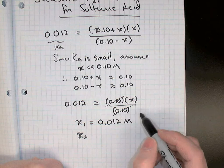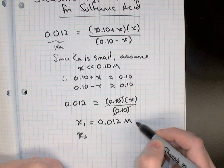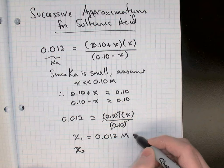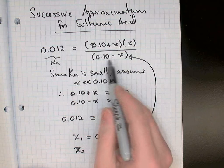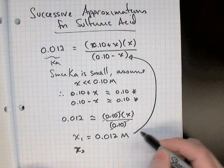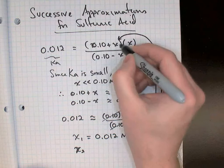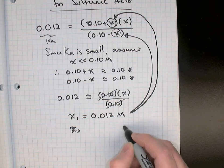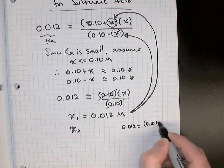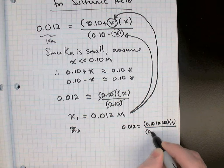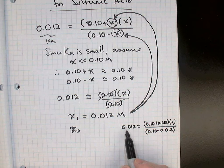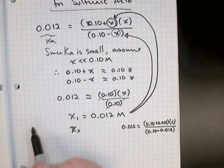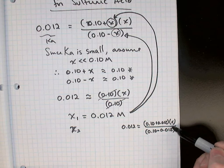Now how do you get the second approximation X₂? The technique that we learned when using this method is to take the first answer we get and go back into our original equation and place it wherever we ignored the X. When we did this before, that meant putting it only in the denominator because there we have this 0.1 minus X, but here notice we ignored X twice, so we have to go back and put it both in the denominator and in the numerator. In this spot in the numerator and in this spot in the denominator. So what we're going to end up with is this equation: 0.012 equals 0.10 plus 0.012 times X over 0.10 minus 0.012. So we just took our first answer 0.012 and put it in the bottom and top where we had ignored it before.